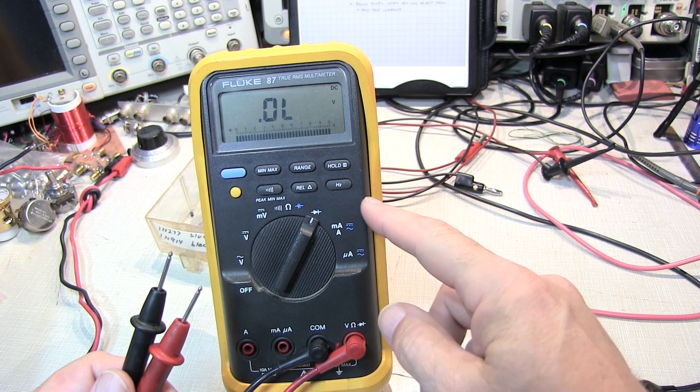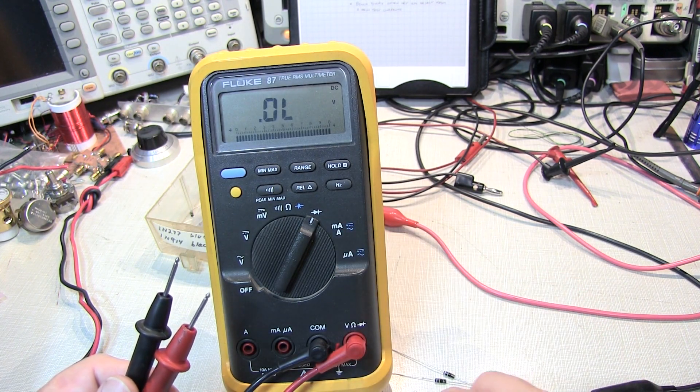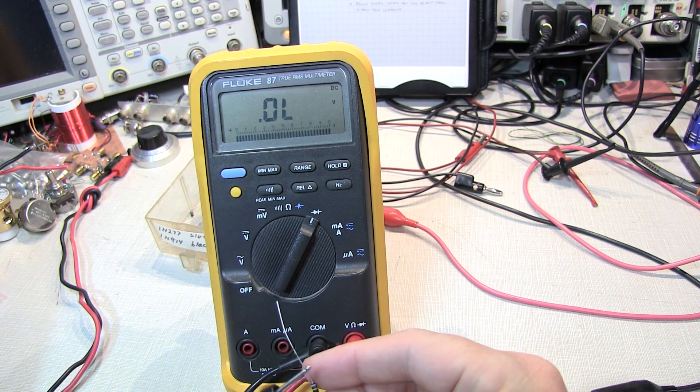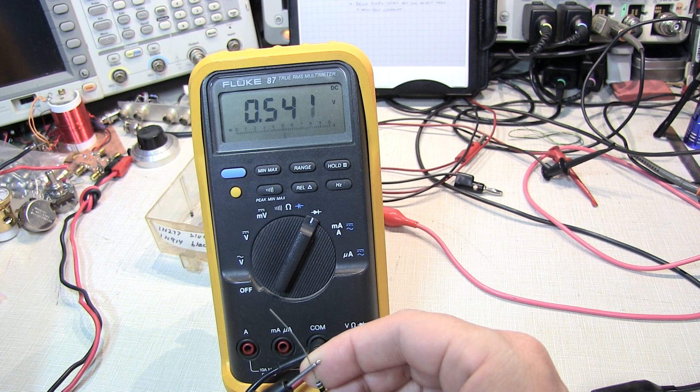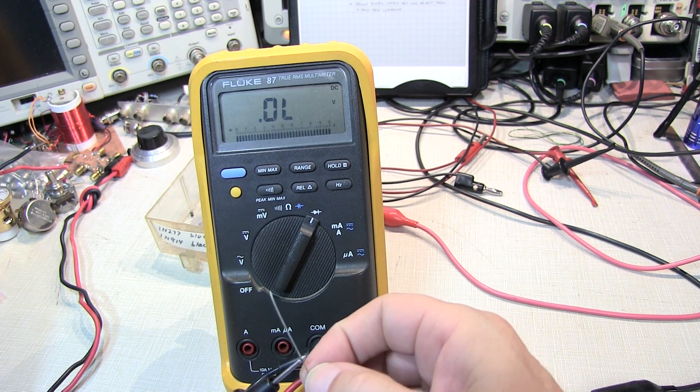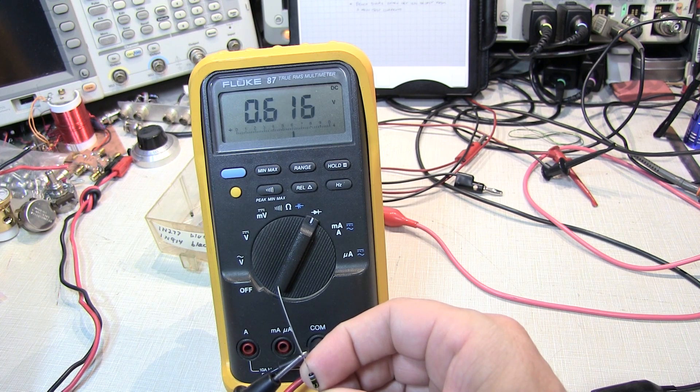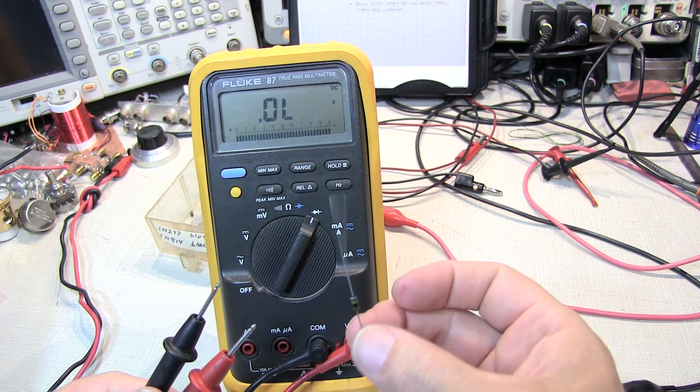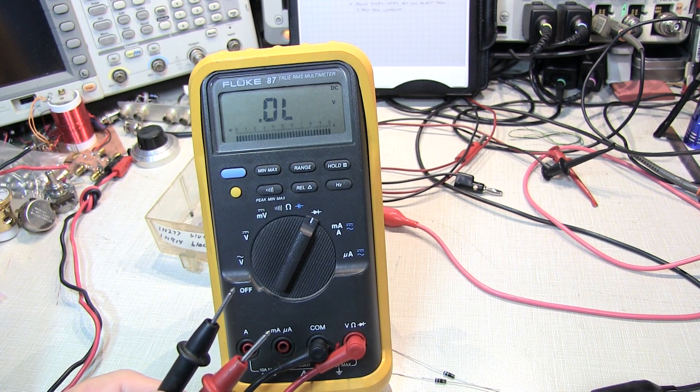So here I've got my Fluke 87 set to the diode test function. I've got a couple of 1N914 diodes here that came out of a bag that was marked with the same lot. You can see this particular diode measures about 540 millivolts, while this one here measures about 615 millivolts. So the same lot, but not necessarily the same characteristics of that diode.